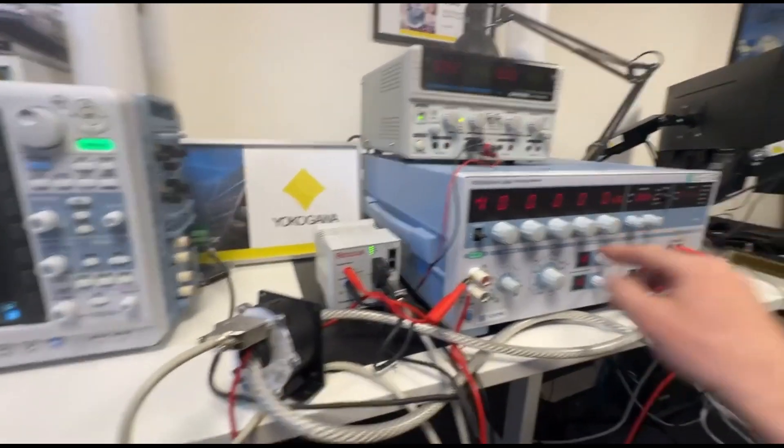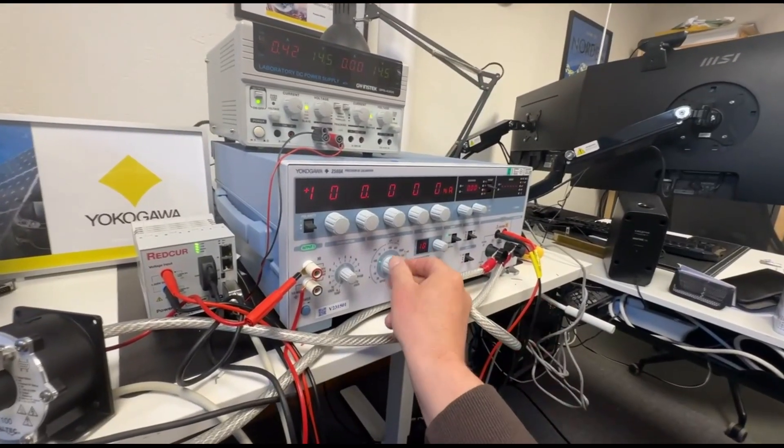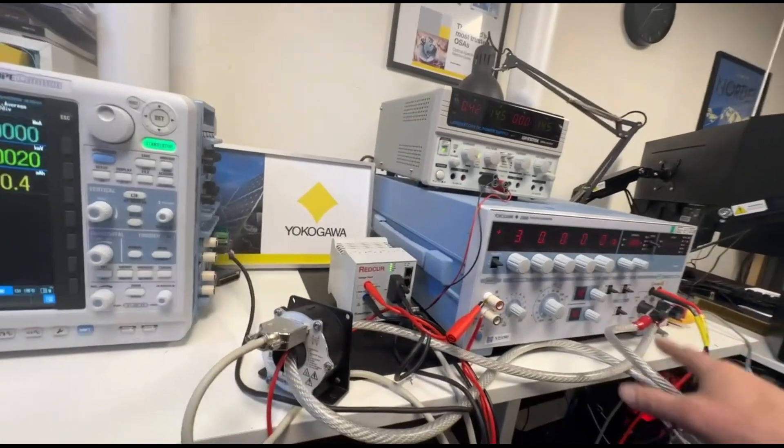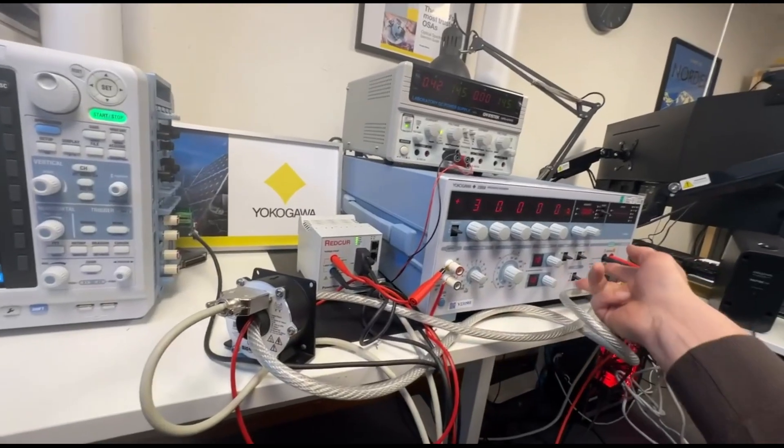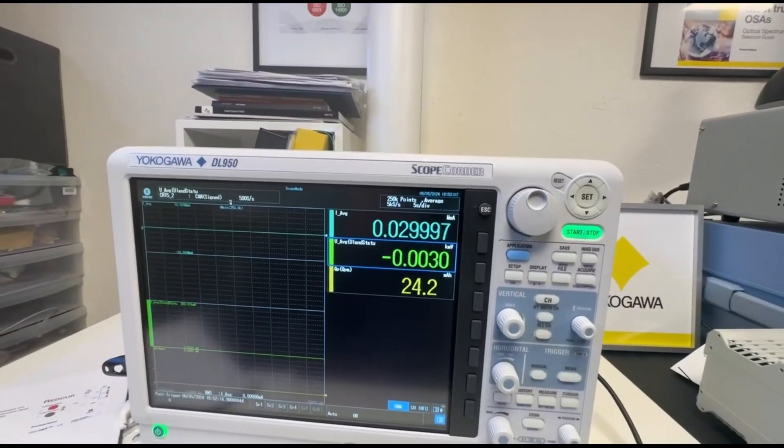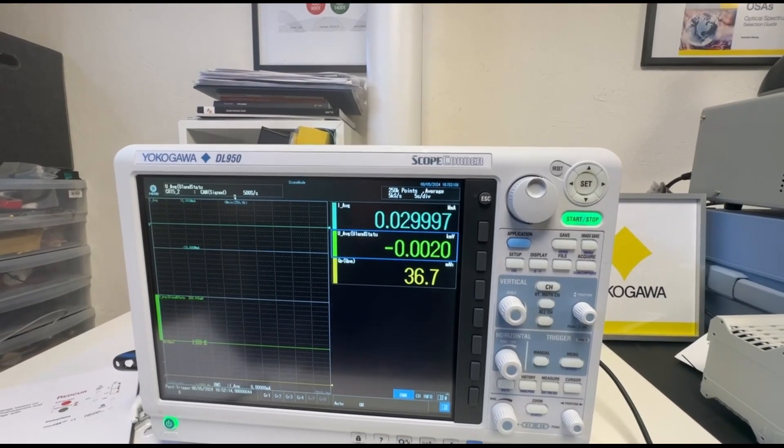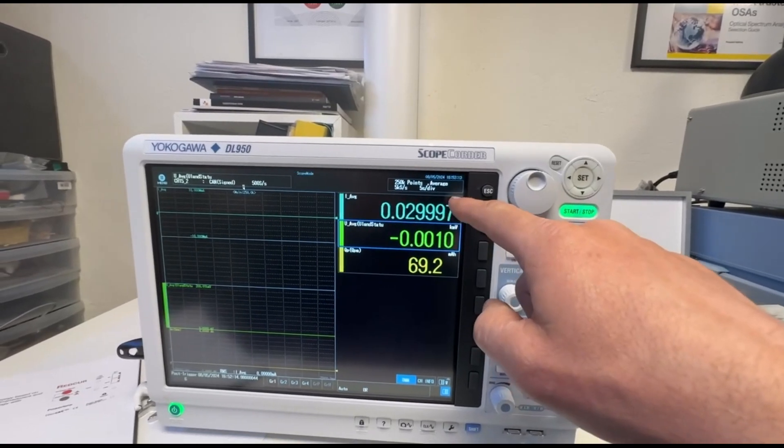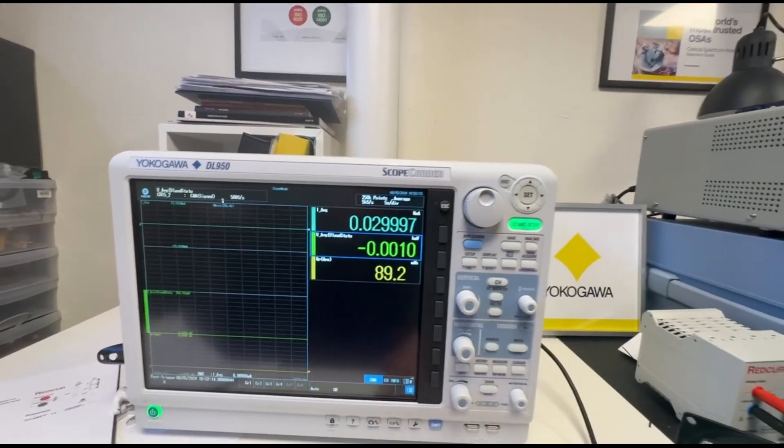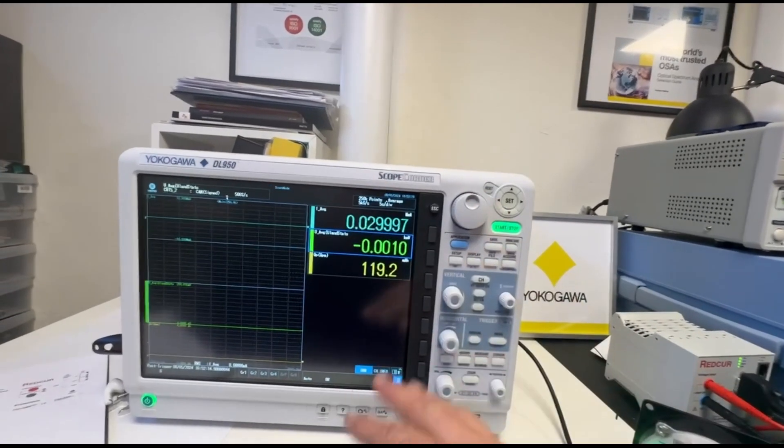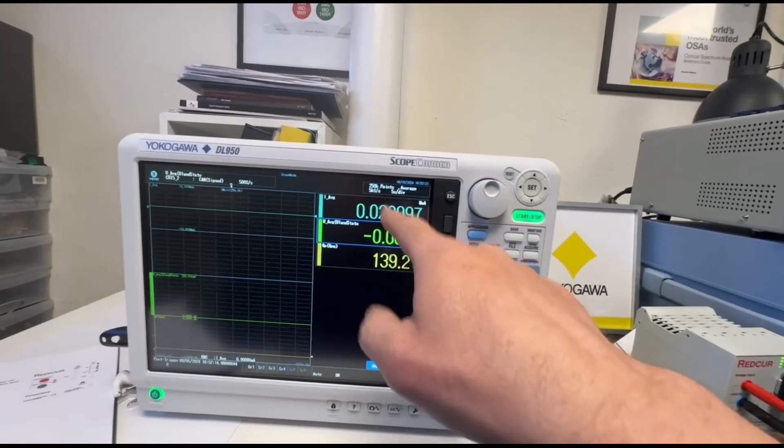So by changing this dial from milliamp to let's say 30 amp, we can output 30 amp through the thicker cable. Press output. And now it goes to 29.997 amp. This is in mega milliamp. This is the default setting from the CAN messages on the output, but we could scale this in other ways.